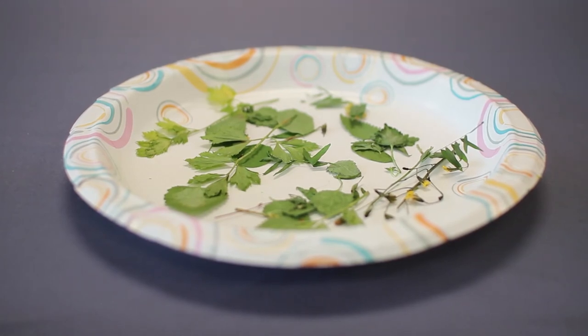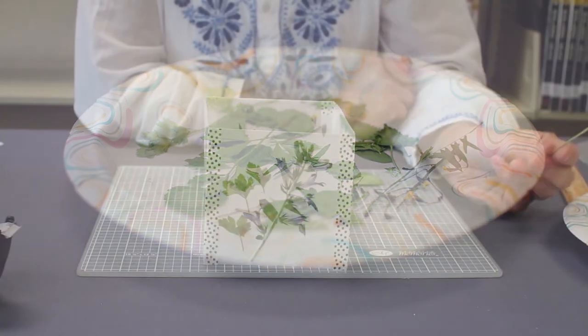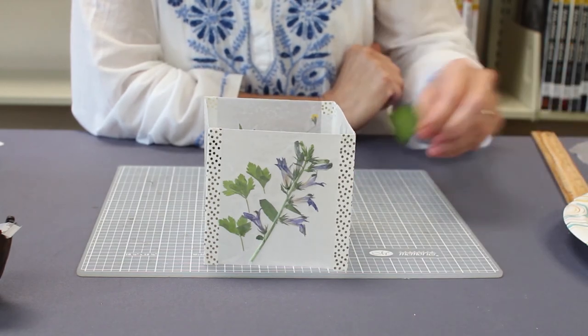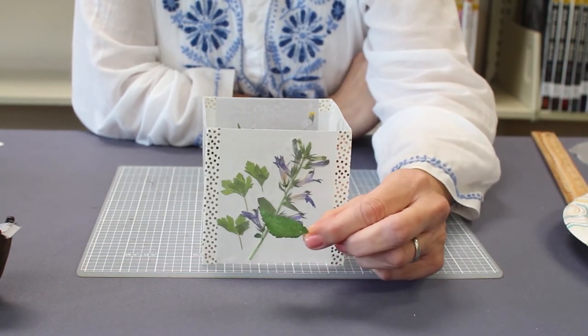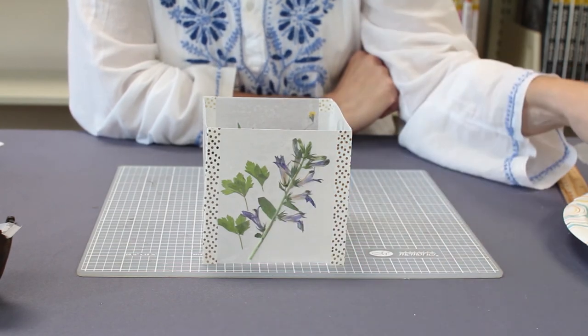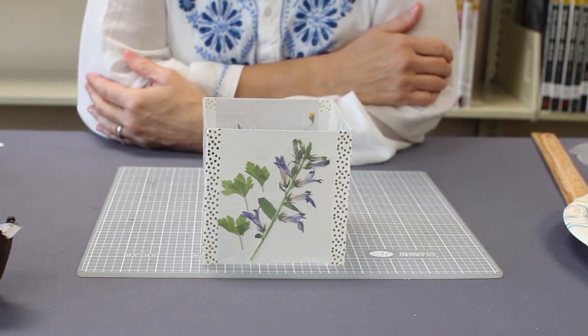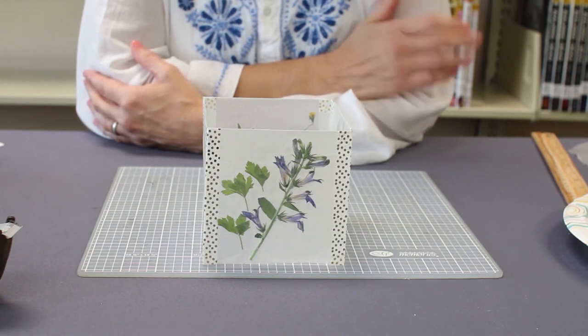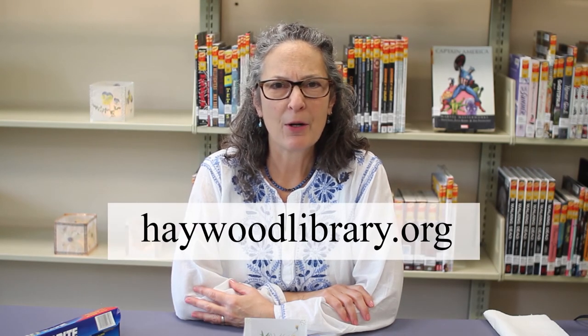You can dry any kind of flower or leaf. This is parsley. Dries beautifully. This is dead nettle leaves. Any little flowers or leaves. The flatter the better. Very easy to press in the microwave. Usually takes about a minute to a minute and a half. And once they're dried then you can use them in your luminary.